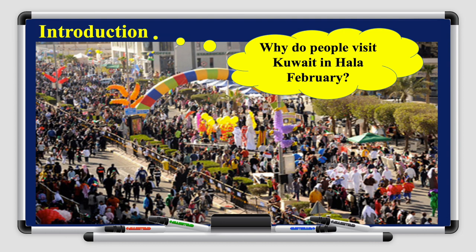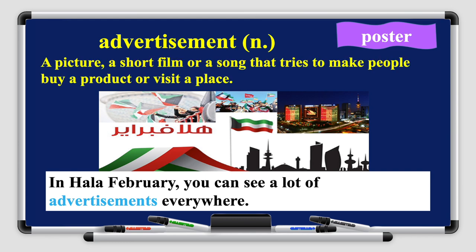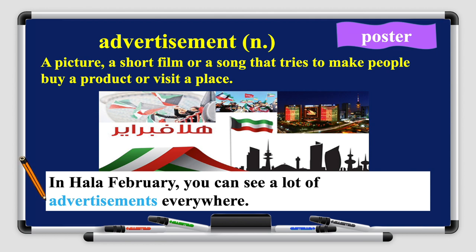But first we have to learn the vocabulary. The first word for today is 'advertisement' — it's a noun. It means a picture, a short film, or a song that tries to make people buy a product or visit a place. In the purple flag on the right you can see the word 'poster' — poster and advertisement are synonyms, they mean the same or almost the same meaning. In Hala February you can see a lot of advertisements everywhere — you can see the celebration of Hala February in a poster, with Kuwait's flag and people having fun.